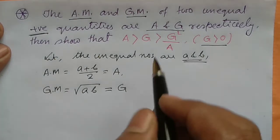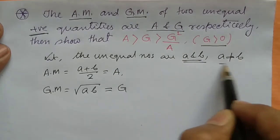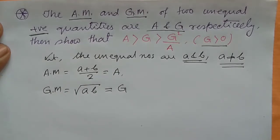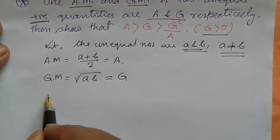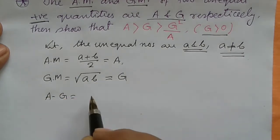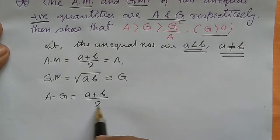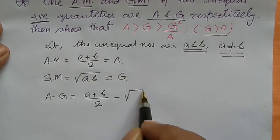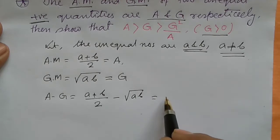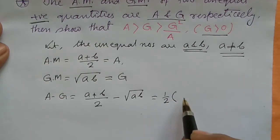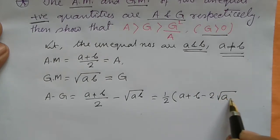Since a and b are unequal, i.e., a ≠ b, we compute A − G. Substituting: A − G = (a + b)/2 − √(ab).